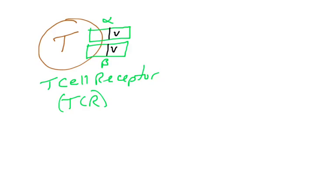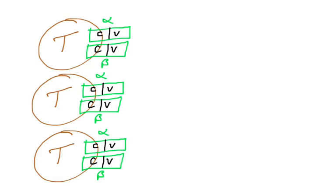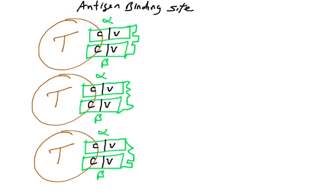We're going to see variable regions in these proteins. Just like the immunoglobulin light chain and heavy chain genes, the genes that encode for the alpha and beta T cell receptor proteins are going to undergo gene rearrangement — VDJ recombination and junctional diversity — which allows you to make billions of possible T cell receptors. So the millions, if not billions, of T cells made in your thymus are going to have antigen-binding sites that vary from one another.